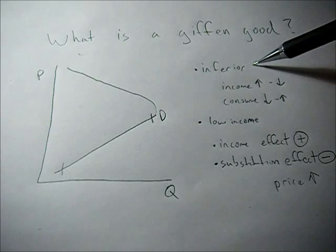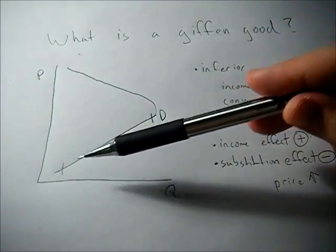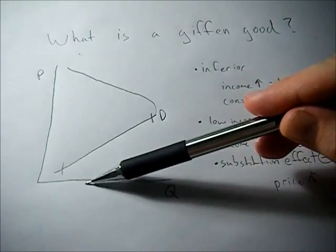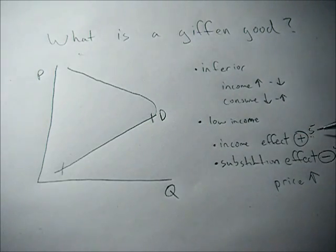So what makes it a Giffen Good and upward sloping is that the income effect is greater than the substitution effect. So the income effect is positive, say 5. Substitution effect is negative, say 4. So 5 minus 4 is 1 which means that as price goes up we actually consume more of the good. So the income effect dominates the substitution effect.